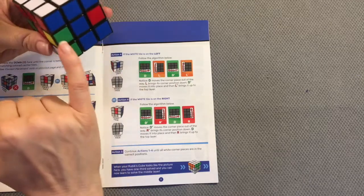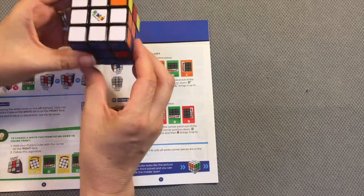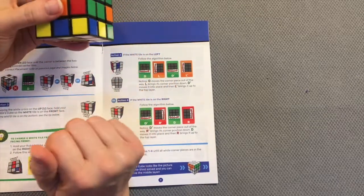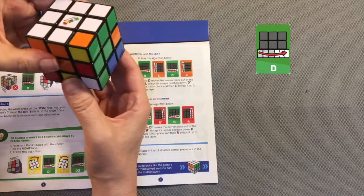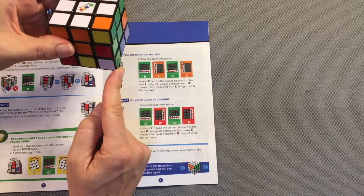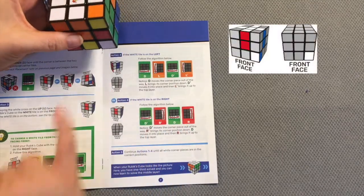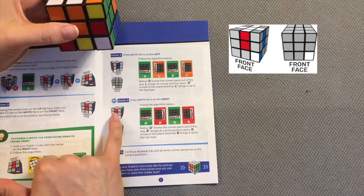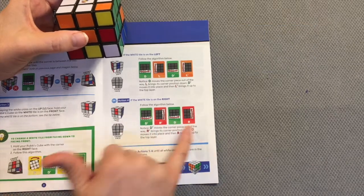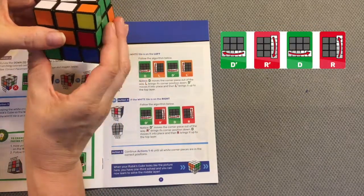I am almost there. I have one corner left I need to find. There's my corner piece. I'm not facing down, so I can go straight to action 4. Again, I have it on my right side, which means I come down here and I run this algorithm: down to the left.